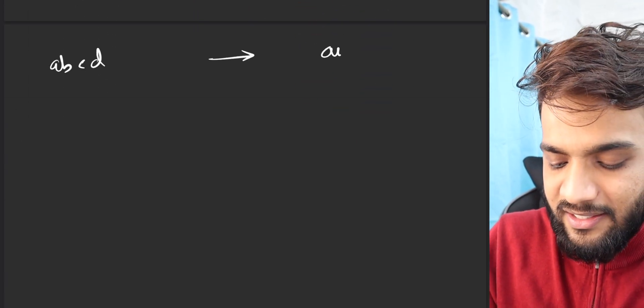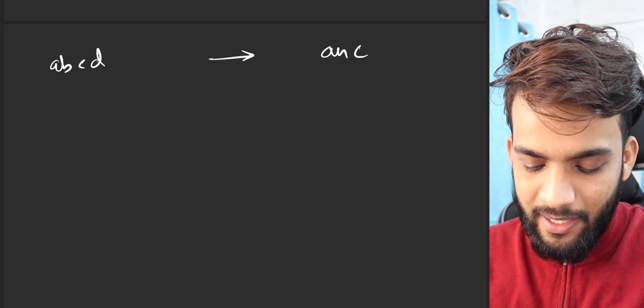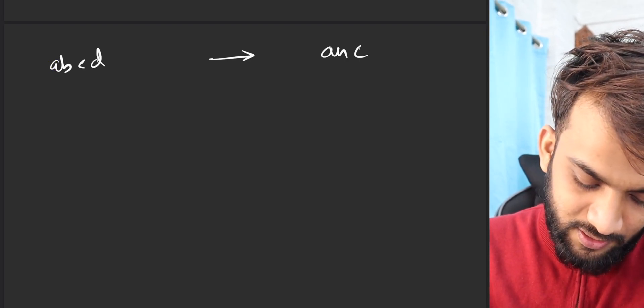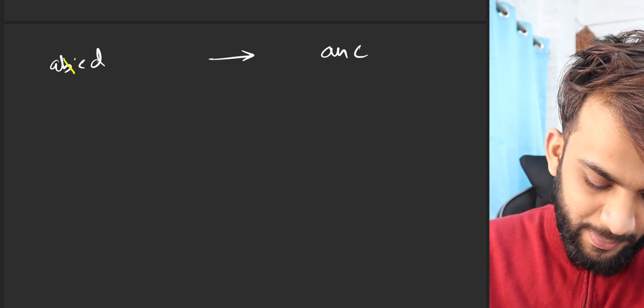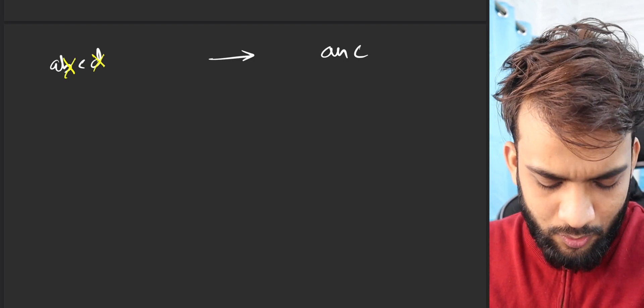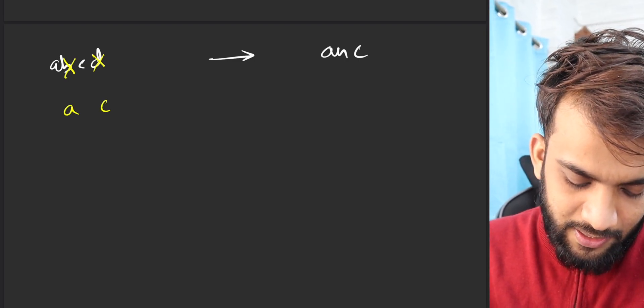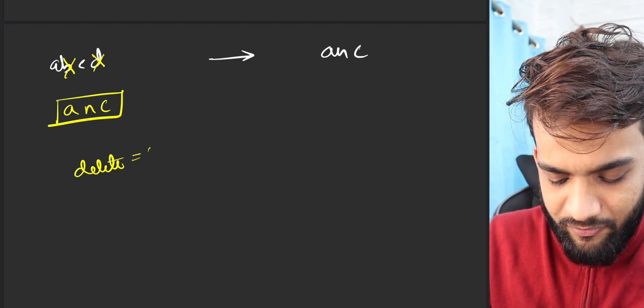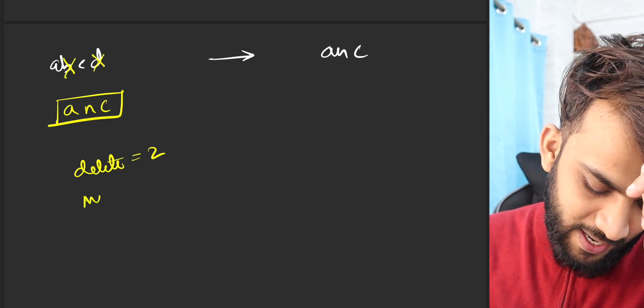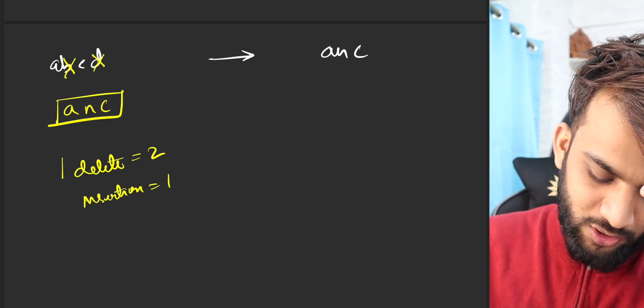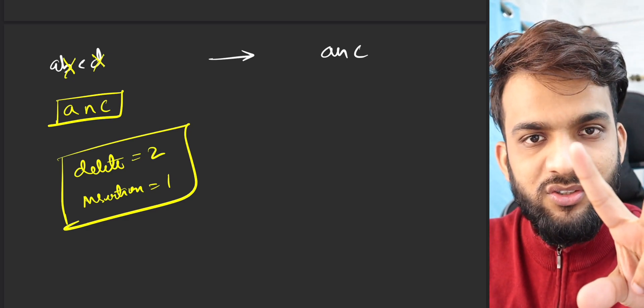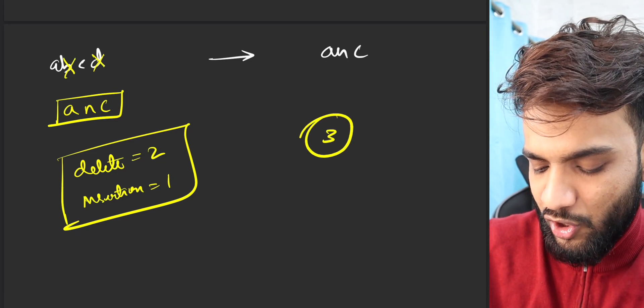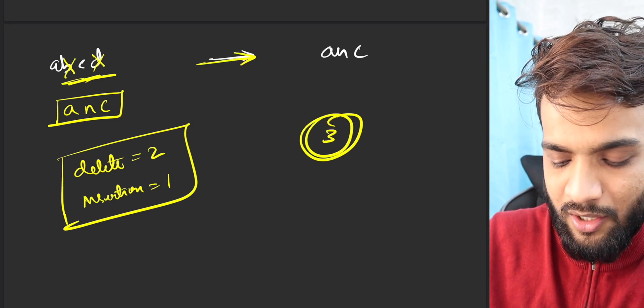But before that, let's see how we can actually convert ABCD to ANC in the minimum number of operations. I can be like, let's delete B and D. So if I delete B and D, we will have something like AC. And now insert N. So I can have two deletions and one insertion.